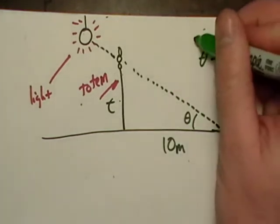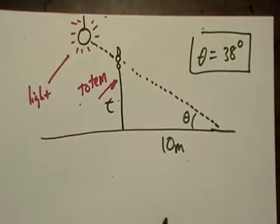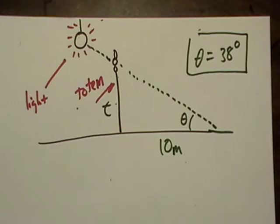And I've given you theta being 38 degrees. Now, I just made this problem up, so I'm probably as confused as you are. So let's see if we can't do some trigonometry here.